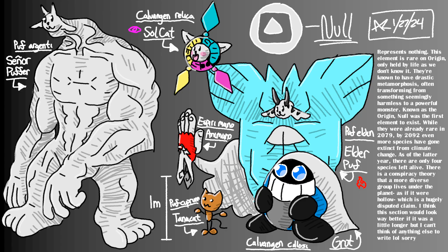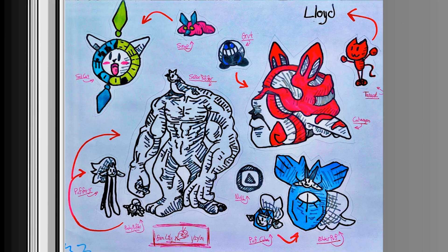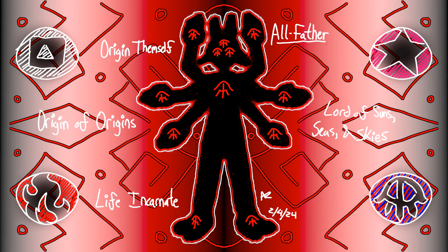We don't know much about these null elementals, who we call the Origin, but there's proof that they built a civilization billions of years ago that only exists in ruins on the most desolate parts of the planet. As the story goes, a character called the All Father survived a calamity that wiped out their civilization, and life as we know it came from them. Most scientists agree that fire was the first form of magic to be discovered, found by the people of Origin during the All Father's time, perhaps by the All Father themself, before life as we know it began.